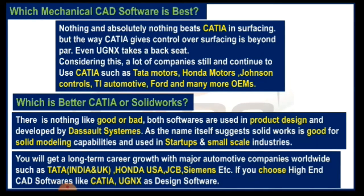Lots of companies still continue to use CATIA, such as Tata Motors, Honda Motors, Johnson Controls, TI Automotive, Ford, and many more OEMs. So if you look at why most automotive companies use CATIA V5, the main reason is its surfacing capabilities.